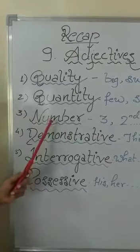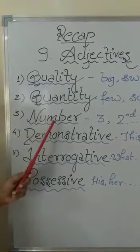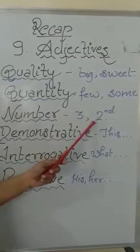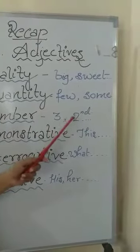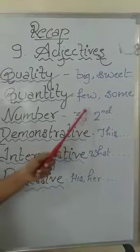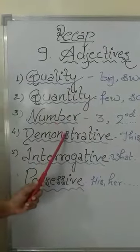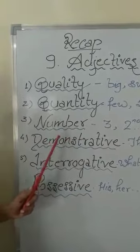Next, we have adjective of number. Here, examples: 3, second, 10. These are the numbers which tell the exact number. That is why they are called adjective of number.